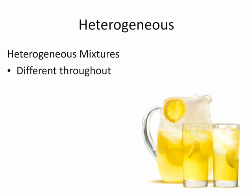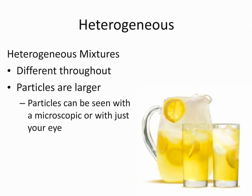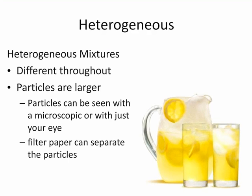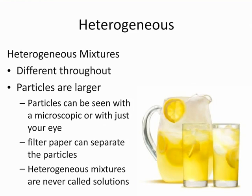Heterogeneous mixtures are the opposite — their composition varies throughout. Some of the particles are larger and can be seen; you may or may not need a microscope to see them, but the particles can be seen. Filter paper can trap the larger particles in a heterogeneous mixture, letting the smaller particles pass through. Filter paper can be used to separate the particles of some heterogeneous mixtures.